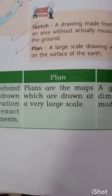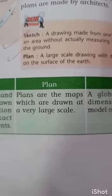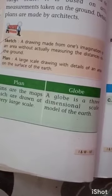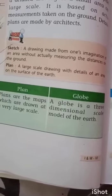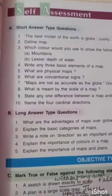A globe is a three-dimensional scale model of the earth and is the best representation of our planet. Please learn this difference — it is very important. In the very next video I will give you the short answer type questions. Thank you.